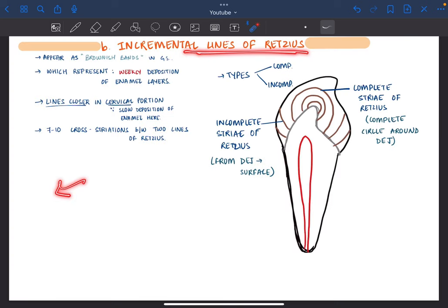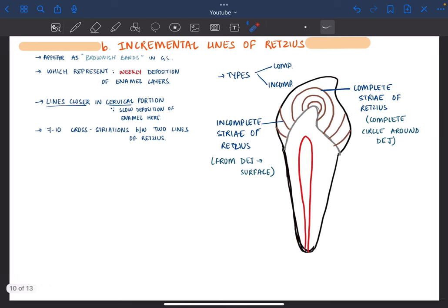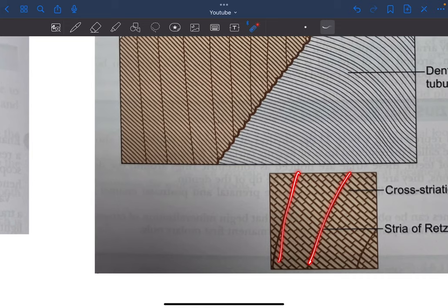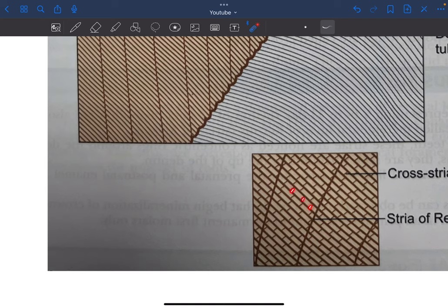Lines of Retzius are the same as cross-striations except for the period. Cross-striations represent 24 hours, while lines of Retzius represent weekly deposition of enamel. They appear as brownish bands in ground section. In the cervical portion, the deposition is quite slow, hence the lines appear closer to one another. We can see 7 to 10 cross-striations between two lines of Retzius.